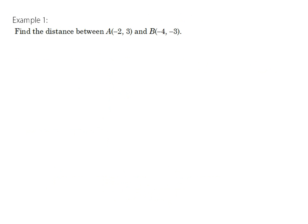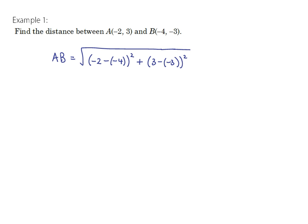There are a lot of subscripts, superscripts, squares, and square roots — it's complicated. You just need to remember it's Pythagoras' theorem: take the square root of the difference between the x-coordinates squared plus the difference between the y-coordinates squared. Let's look at a couple of examples. The distance between A and B where A has coordinates negative 2, 3 and B has coordinates negative 4, negative 3. AB equals the square root of (negative 2 minus negative 4) squared plus (3 minus negative 3) squared.